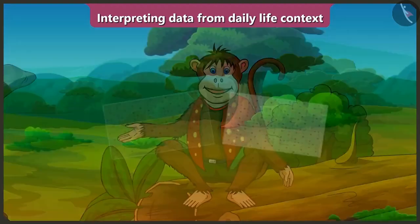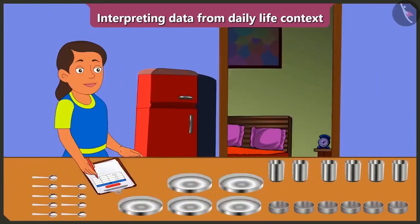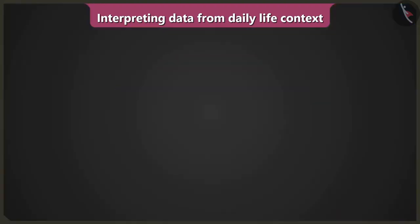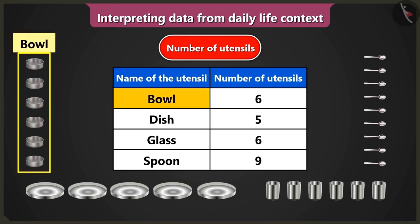Children, in this video we will learn how to interpret data from the table using interesting examples. I know how to fill the table, and now I will try to interpret data from the table. The data about utensils we have is given in this table. The data about names of the utensils is given in the first column and the data about the number of utensils is given in the second column.